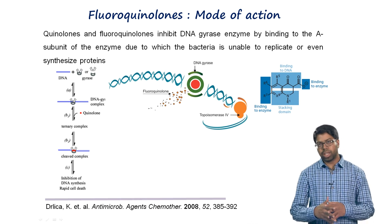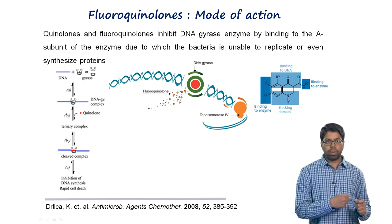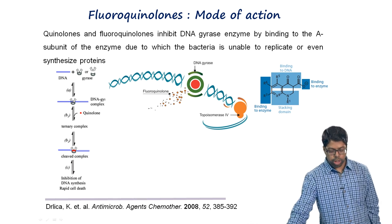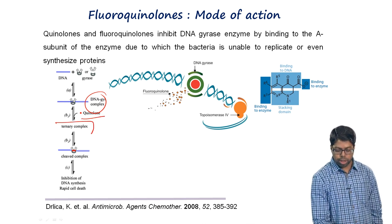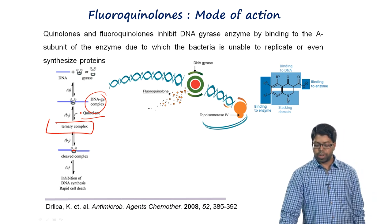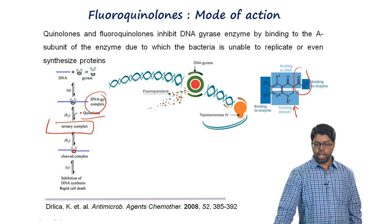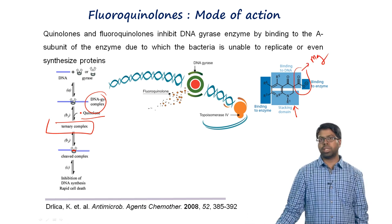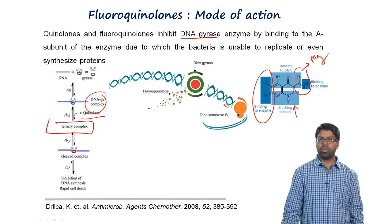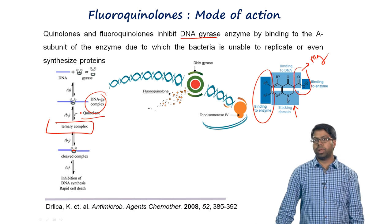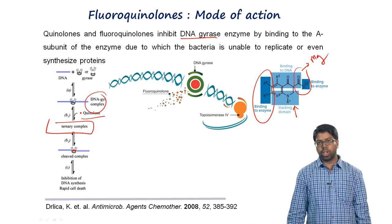Once DNA is prepared for replication, DNA gyrase or topoisomerase IV forms a complex with DNA. Quinolones or fluoroquinolones attack this complex forming a ternary complex. The quinolone scaffold creates stacking interactions with DNA, and the carboxylic acid chelates magnesium present in the active site of the enzyme. Substituents at the sixth and seventh positions also contribute to enzyme interaction, thereby inhibiting DNA gyrase or topoisomerase IV, preventing bacterial replication and causing cell death.